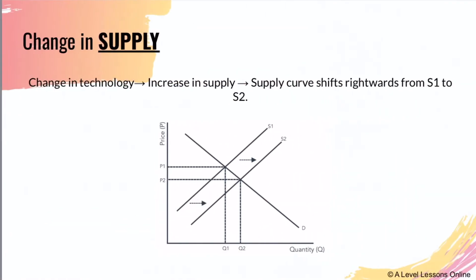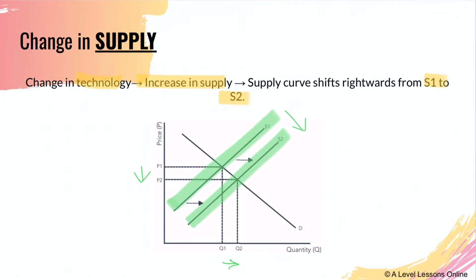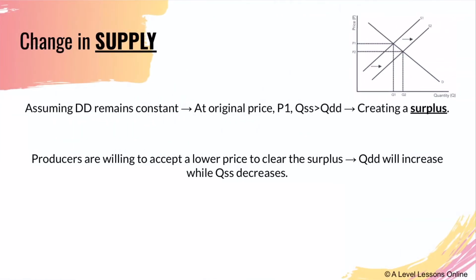Next, we look at change in supply. Let's say there is a change in technology - technology has advanced and is getting better, so there is an increase in supply because of higher productivity and efficiency. As a result, the supply curve shifts rightwards from S1 to S2. Price drops and quantity will rise. Just note that when supply increases, the curve also shifts rightwards.